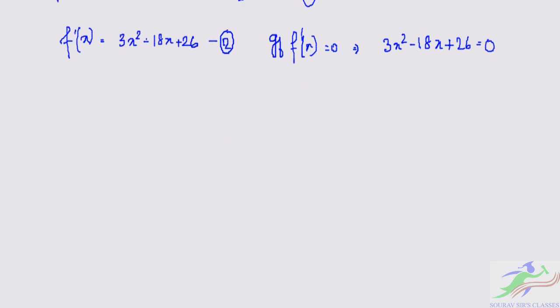Solving for x, we have x=(18±√(b²-4ac))/(2a). That is (18±√(324-312))/6 = (18±√12)/6.